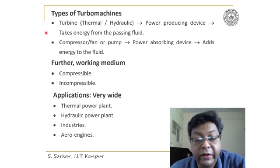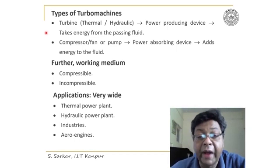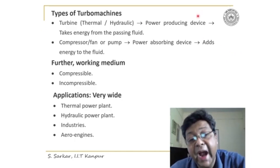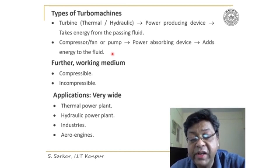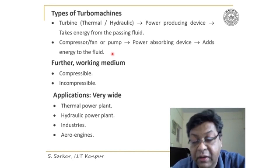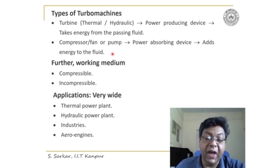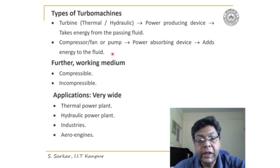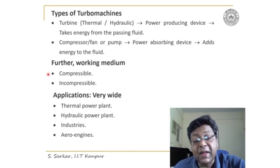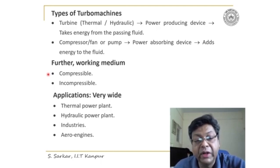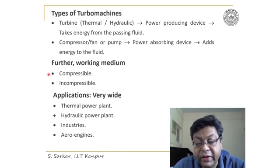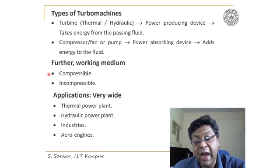Similarly, a compressor, fan, or pump is called a power-absorbing device, and it adds energy to the passing fluid. That means the fluid is compressed as it passes through the impeller, and the pressure at the exit of the compressor will be higher than the inlet. A turbo machine is also classified by the working medium it handles — the working medium could be a compressible flow or an incompressible flow, and the treatment of an impeller handling each would be different.